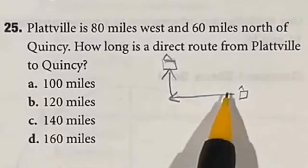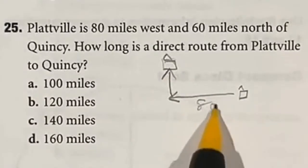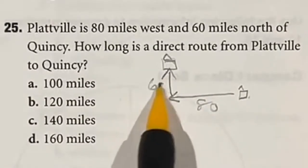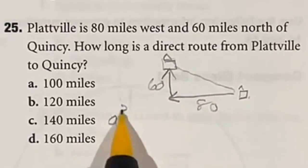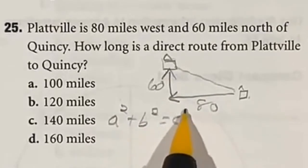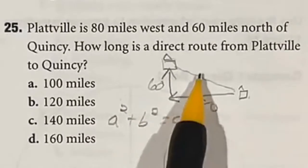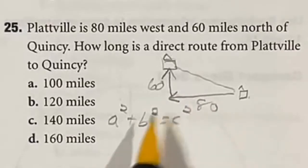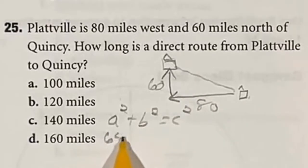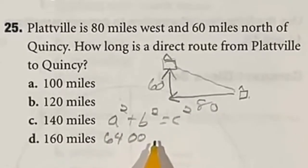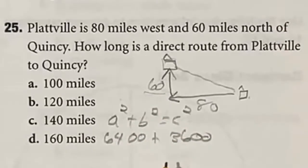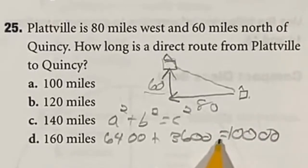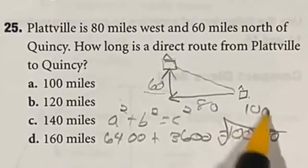For number 25, this town is 80 miles west and 60 miles north of another town, and they want to know what a direct route would be. This is a Pythagorean theorem problem — A squared plus B squared equals C squared. Square each one, add them together, and take the square root. 80 squared is 6,400 and 60 squared is 3,600. Adding those gives 10,000, and the square root of 10,000 is 100. So our answer is A.